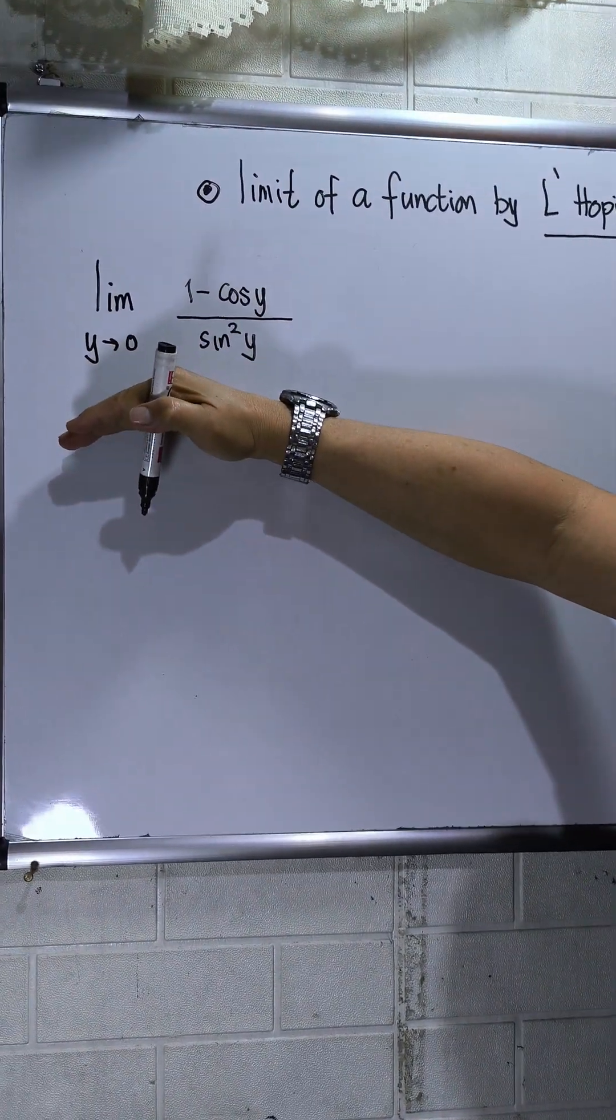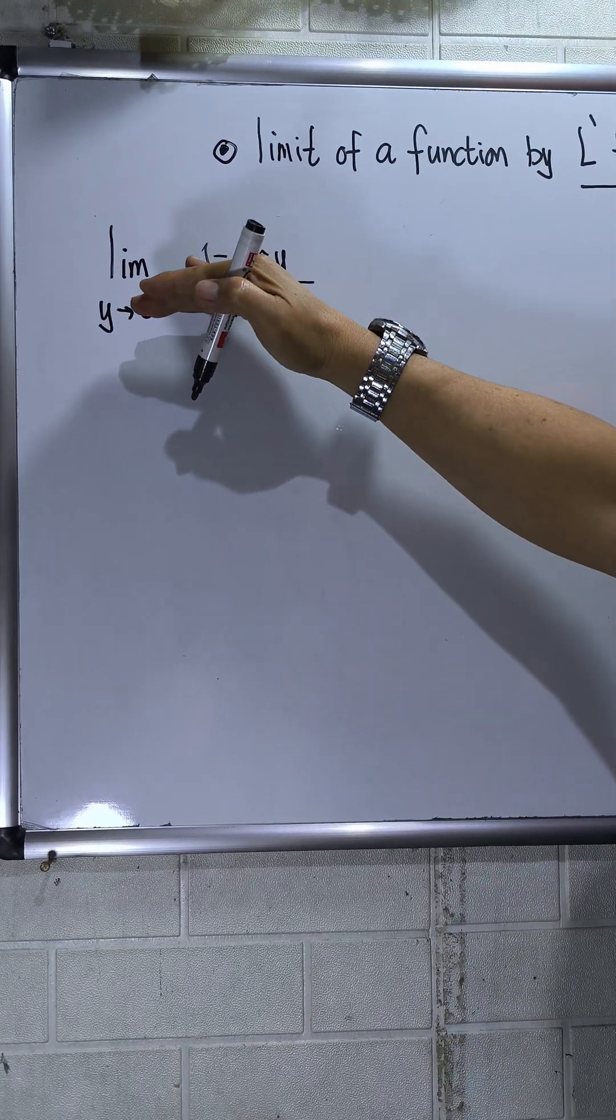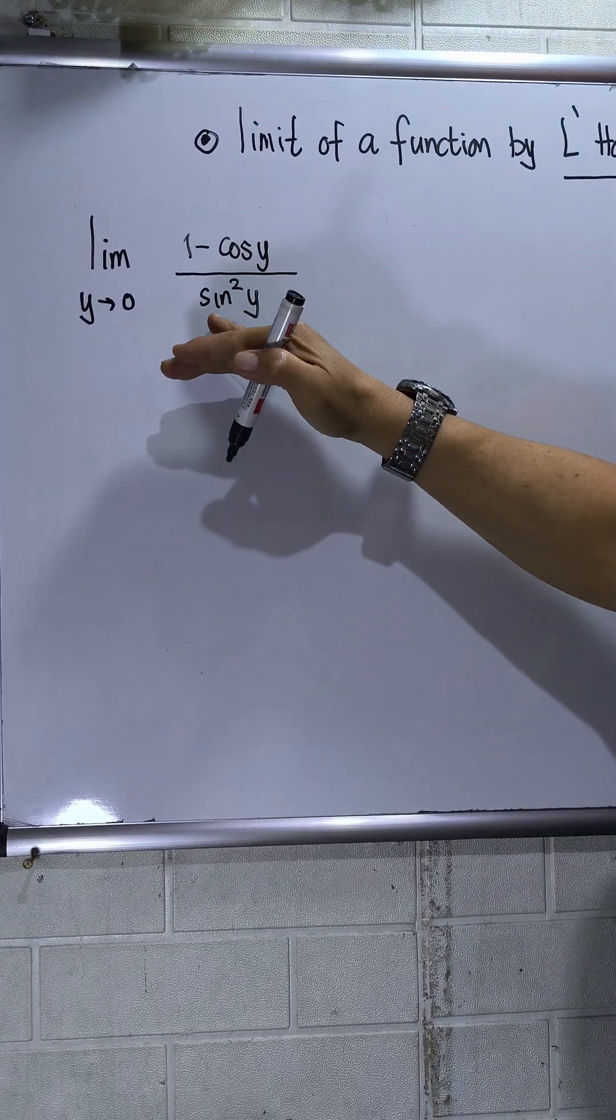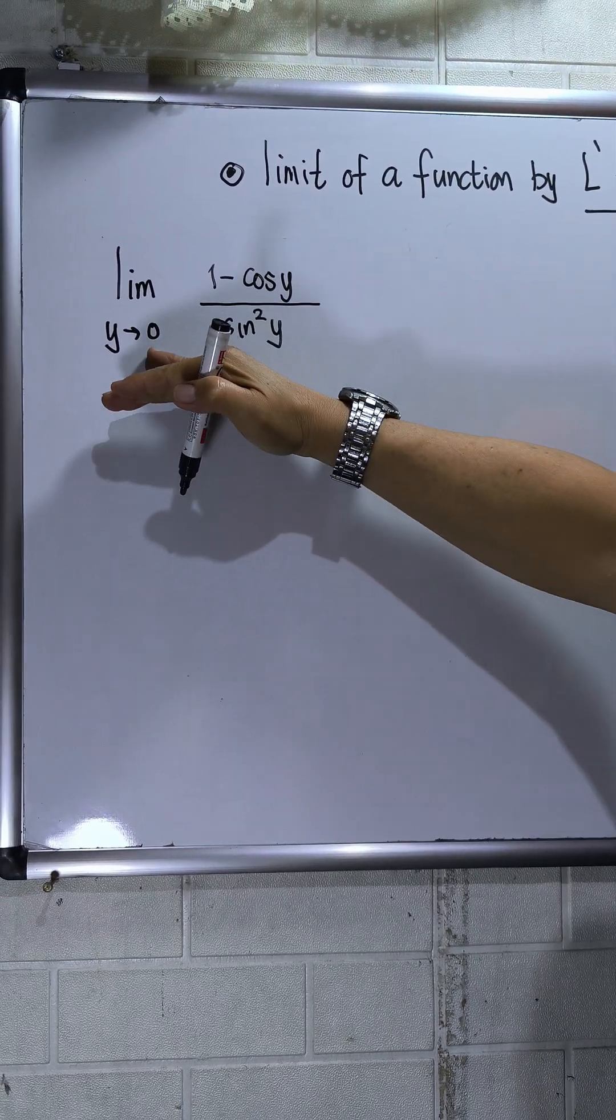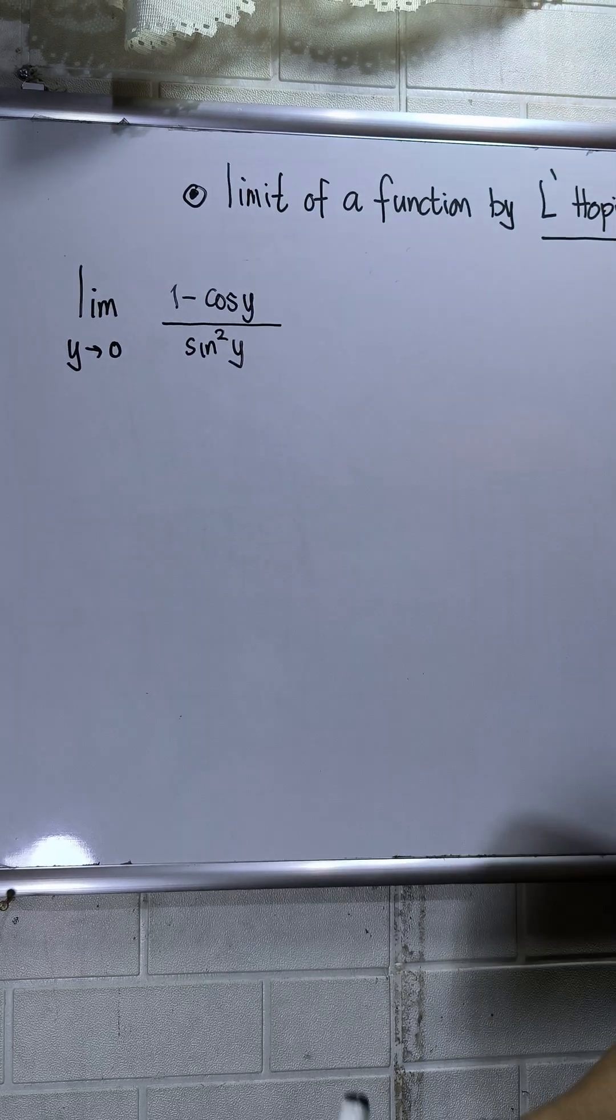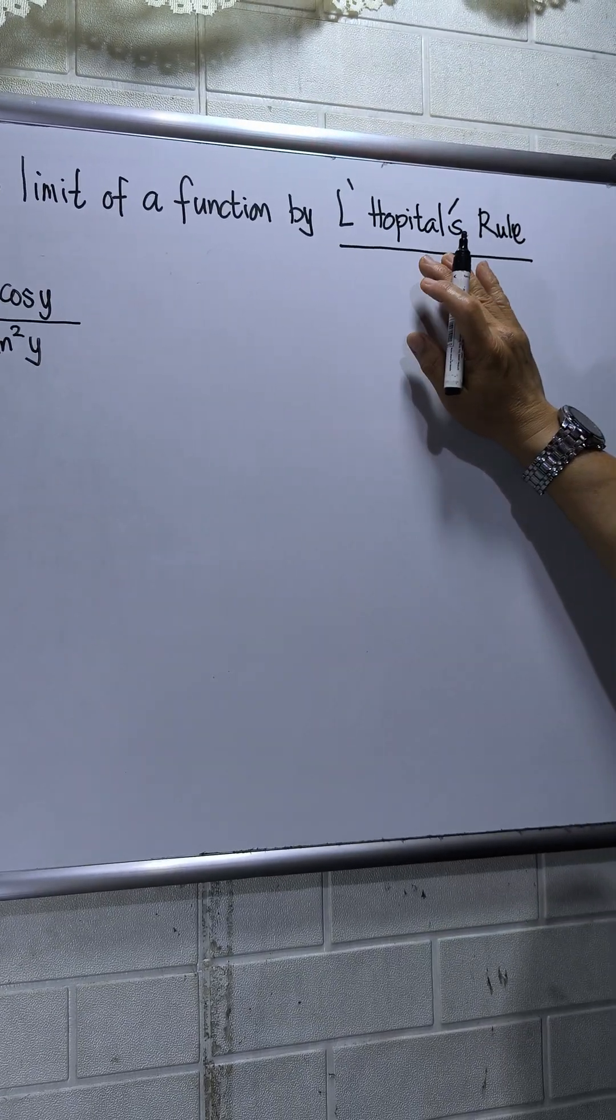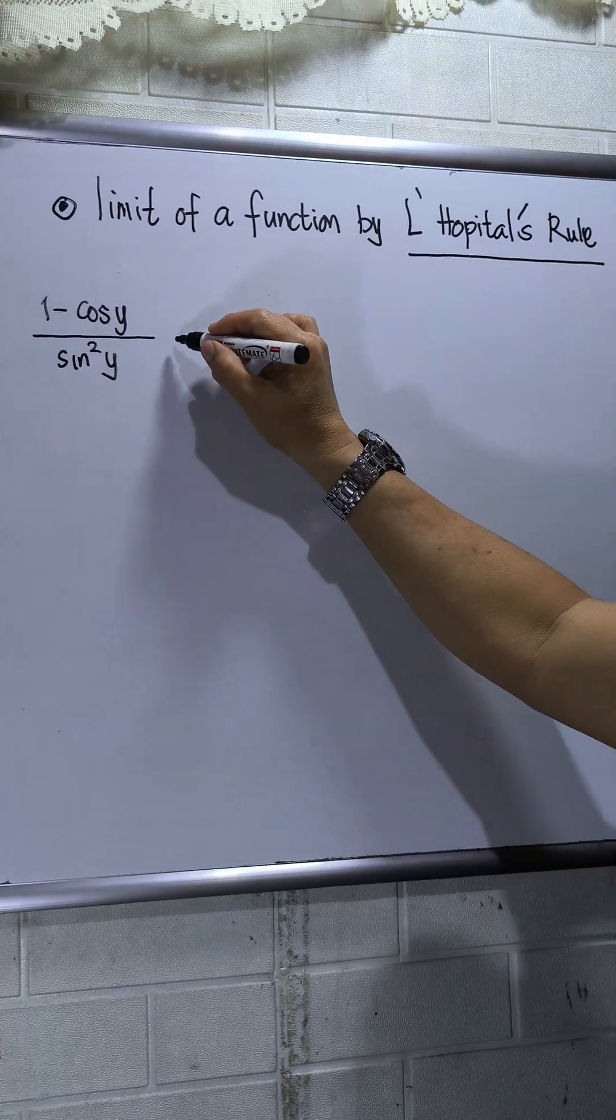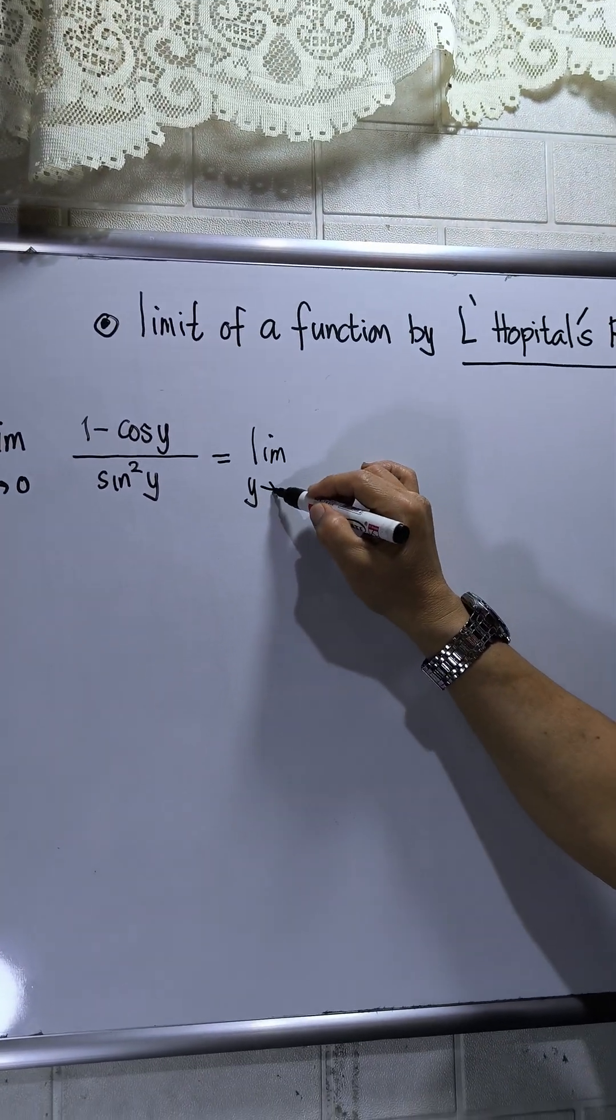So I have here limit as y approaches 0. The function is (1 - cos y) / (sin²y). If we plug in the value of y, the whole function will be undefined. So that's why we will use L'Hôpital's rule. This will be limit as y approaches 0.